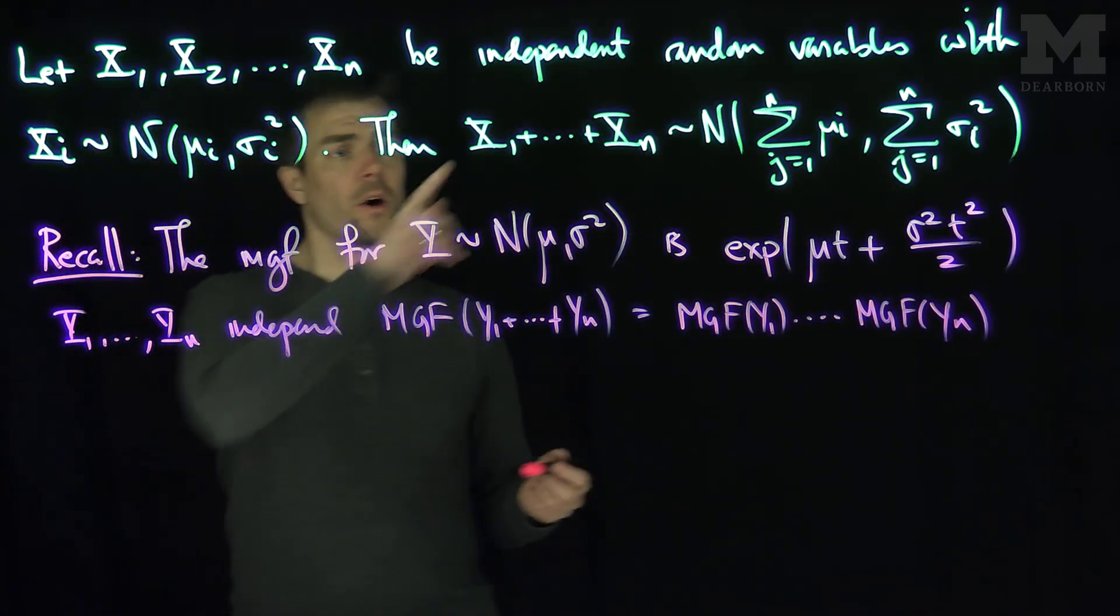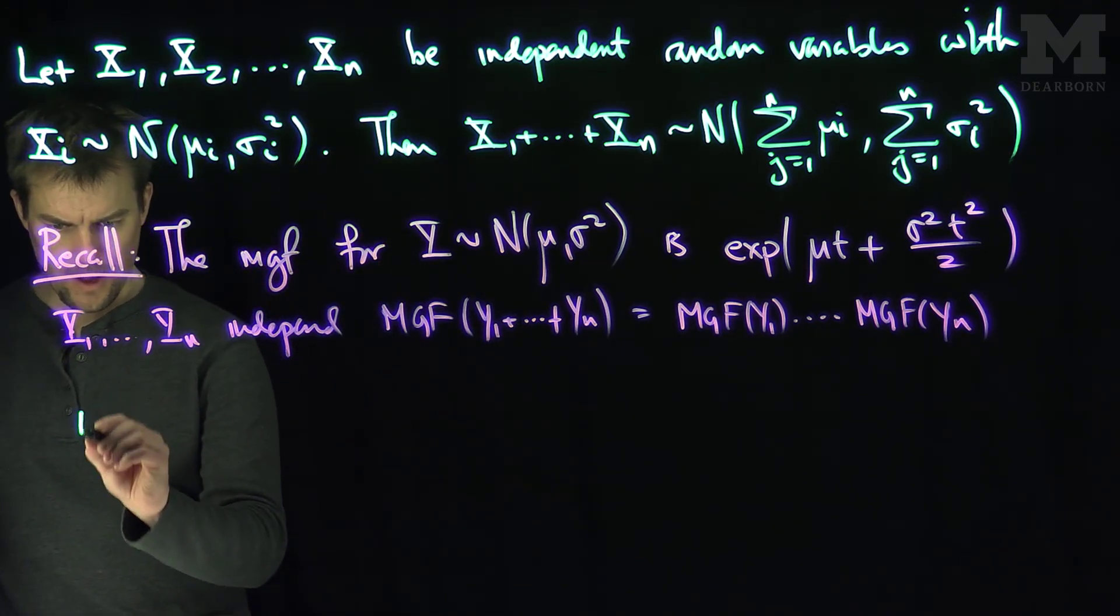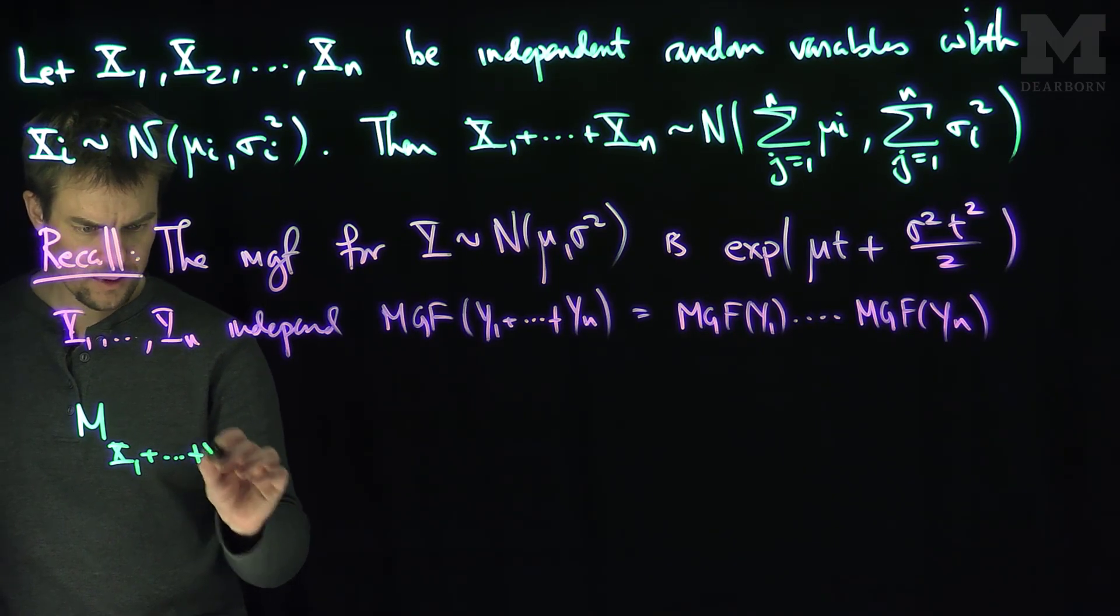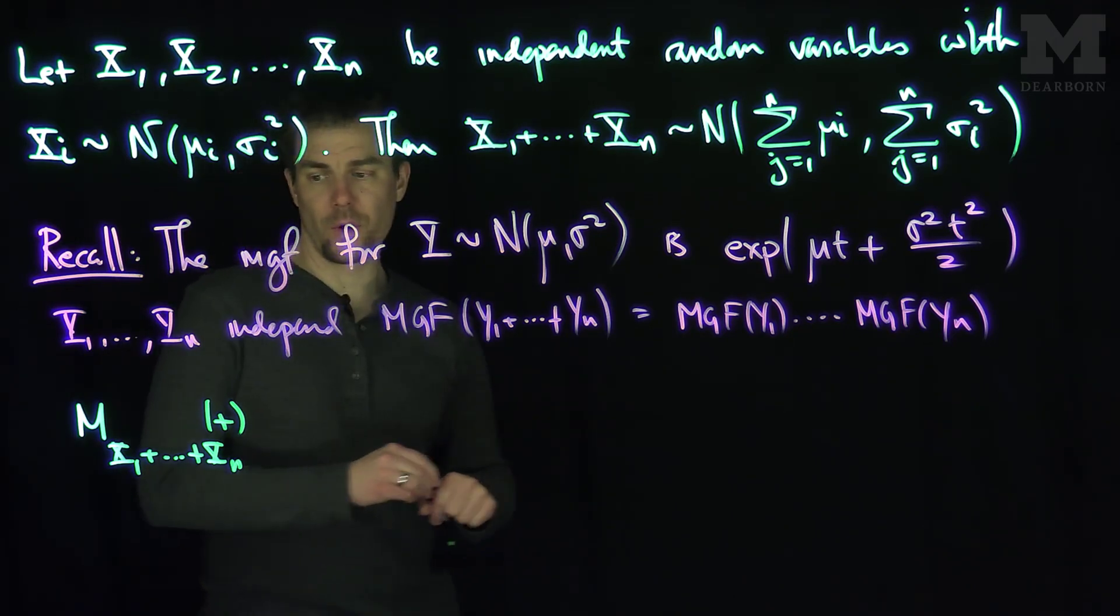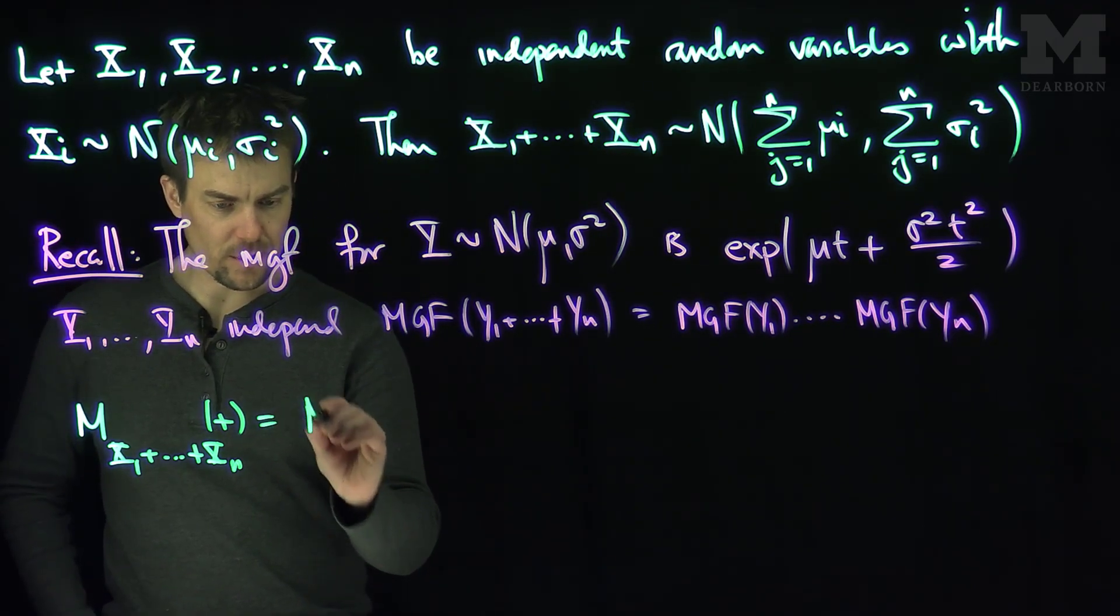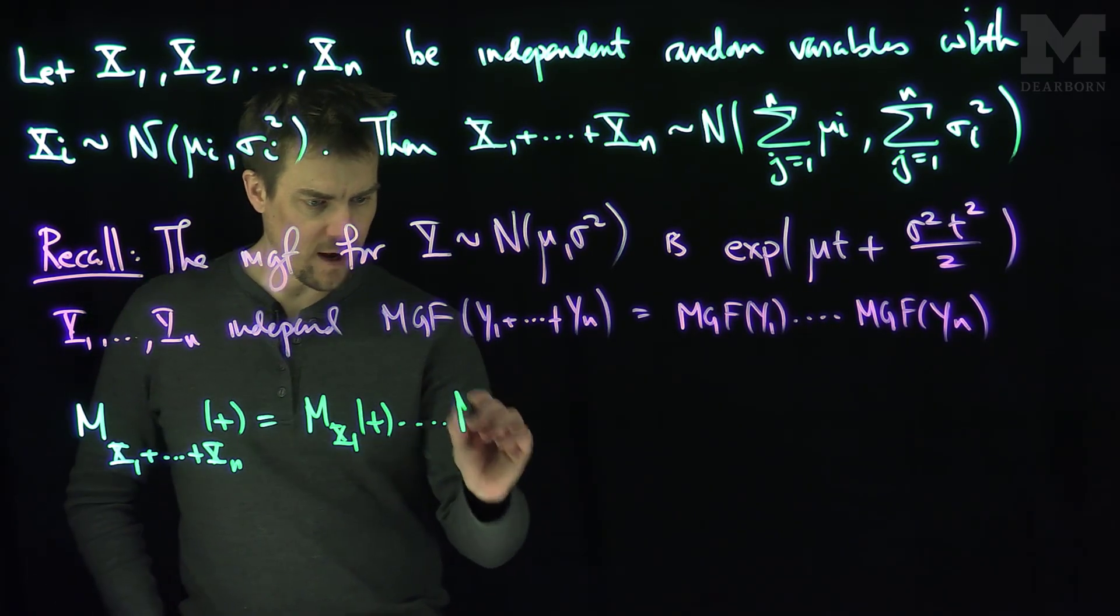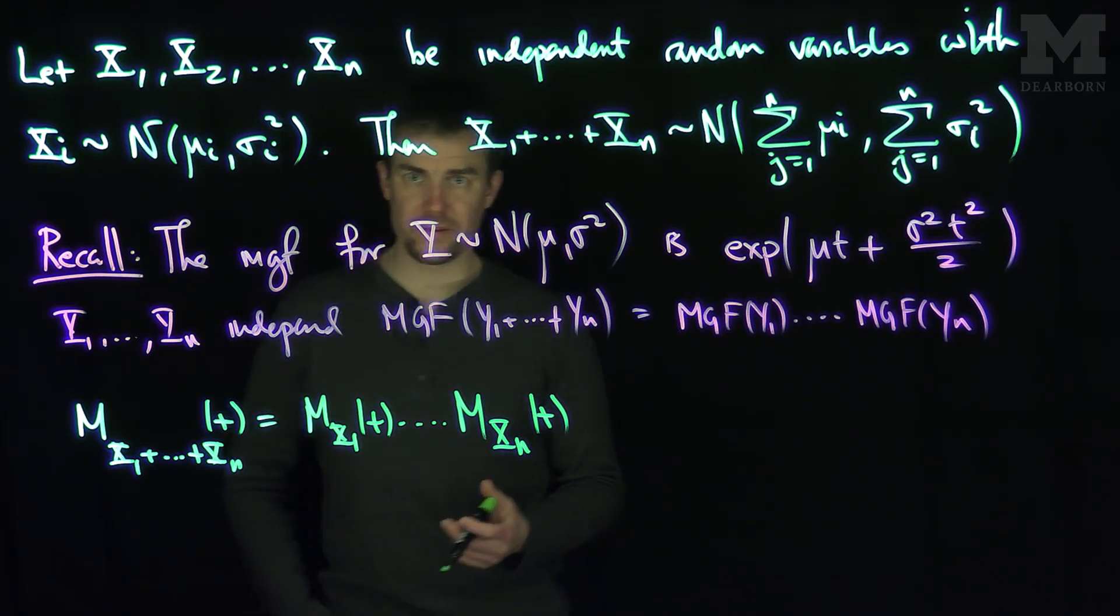So let's use this result now. What will be the MGF of this expression over here? The moment generating function of X₁ plus Xₙ at t is going to be the product of the moment generating functions: MX₁ of t through MXₙ of t by independence and properties of exponentials.